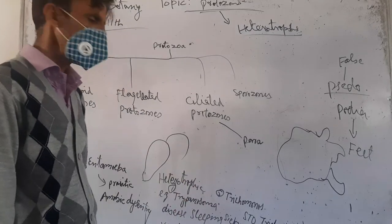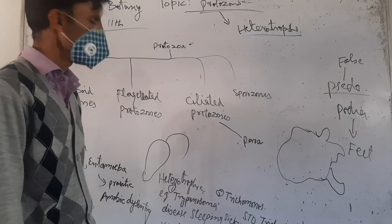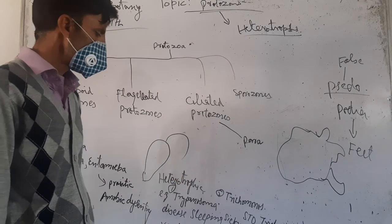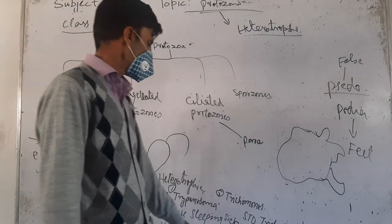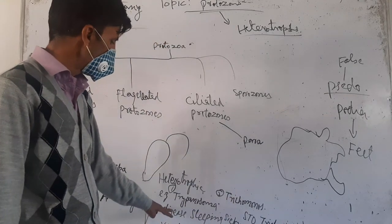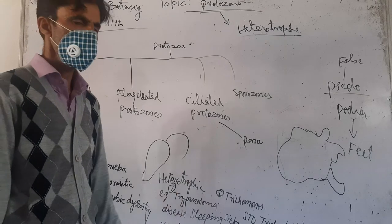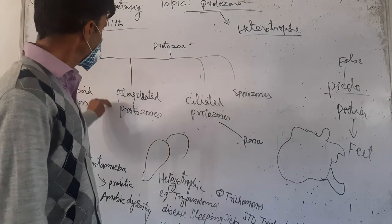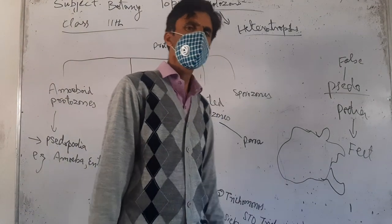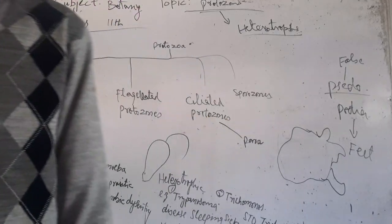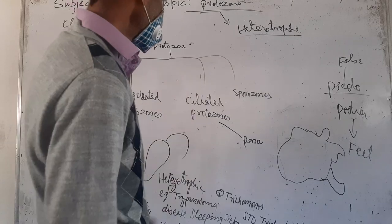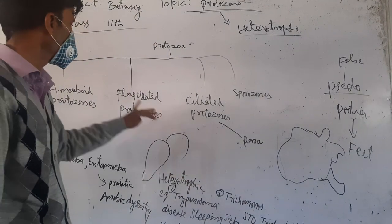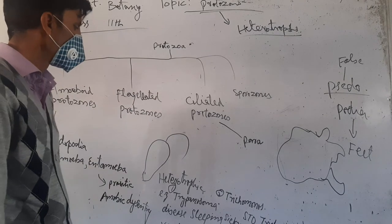Trypanosoma causes sleeping sickness in blood cells — sleeping sickness is very dangerous. Flagellated protozoans are heterotrophic.